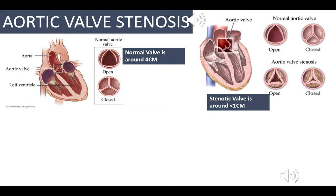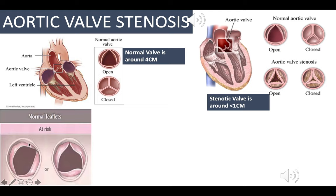A stenotic valve is usually less than one centimeter in diameter, compared to the normal four centimeters. People with two leaflets are more at risk because of increased pressure on the valves from blood flow. Each time blood flows through, it forces the valves open, exposing them to immense pressure, oxygen free radical damage, plaques, and various blood components that accumulate in that area.